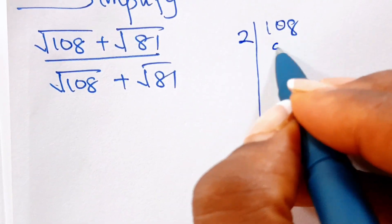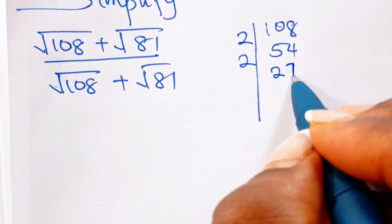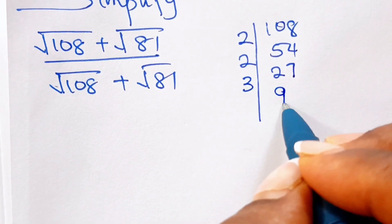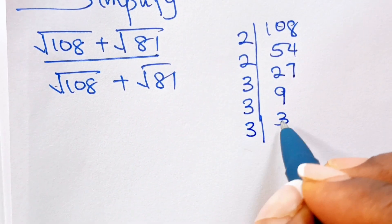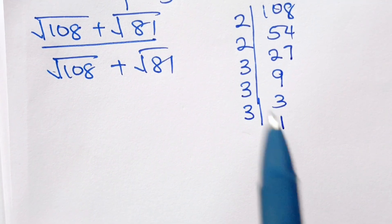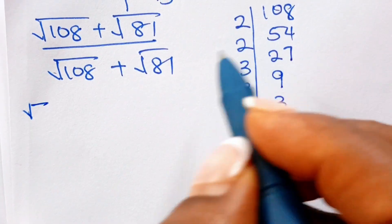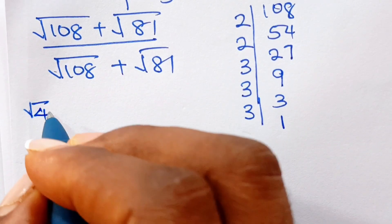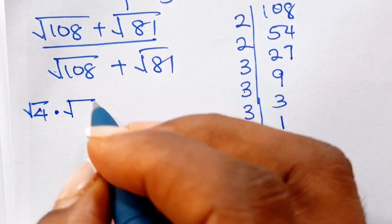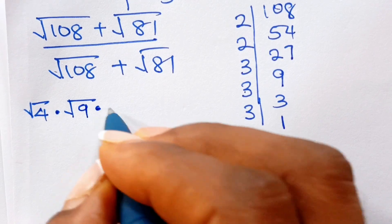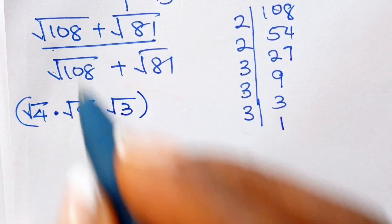2 can divide this to give us 54. 2 can divide this to give us 27, remainder 1. Now, 3 can divide this to give us 9. 3 can divide this to give us 3. And 3 can divide this 3 to give us 1. So that simply means we can rewrite 108 as square root of 2 times 2, which is 4, multiplied by square root of 3 times 3, which is 9, then multiplied by square root of 3 that is remaining. That is it for root 108.